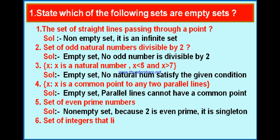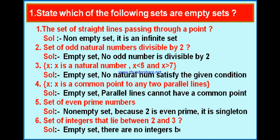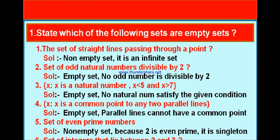Bit 6: the set of integers that lie between 2 and 3. Integers go from minus infinity: ..., minus 3, minus 2, minus 1, 0, 1, 2, 3, and so on. There is no integer between 2 and 3. Since there is no integer, it is an empty set.